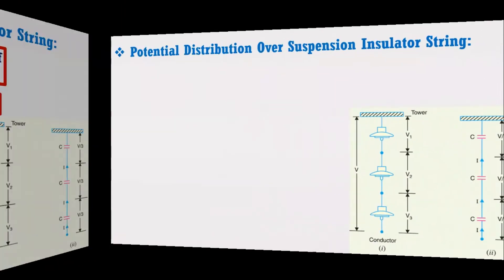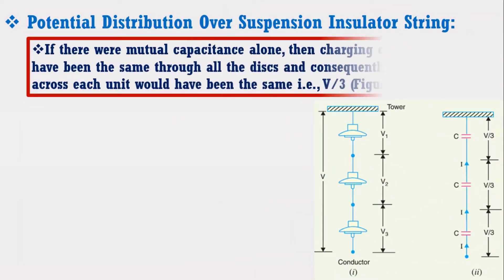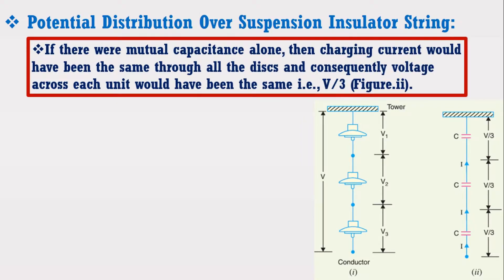If there were mutual capacitance alone, then the charging current would have been the same through all the disks, because all these disks are connected in series. Consequently, the voltage across each unit would have been the same, such as V upon 3, as shown in the figure.